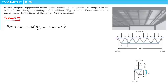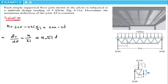Now we write the second-order differential equation that represents the elastic curve: d²v/dx² equals M over EI. Solving for M gives M = EI multiplied by d²v/dx². This is equation one, and the moment expression is equation two.